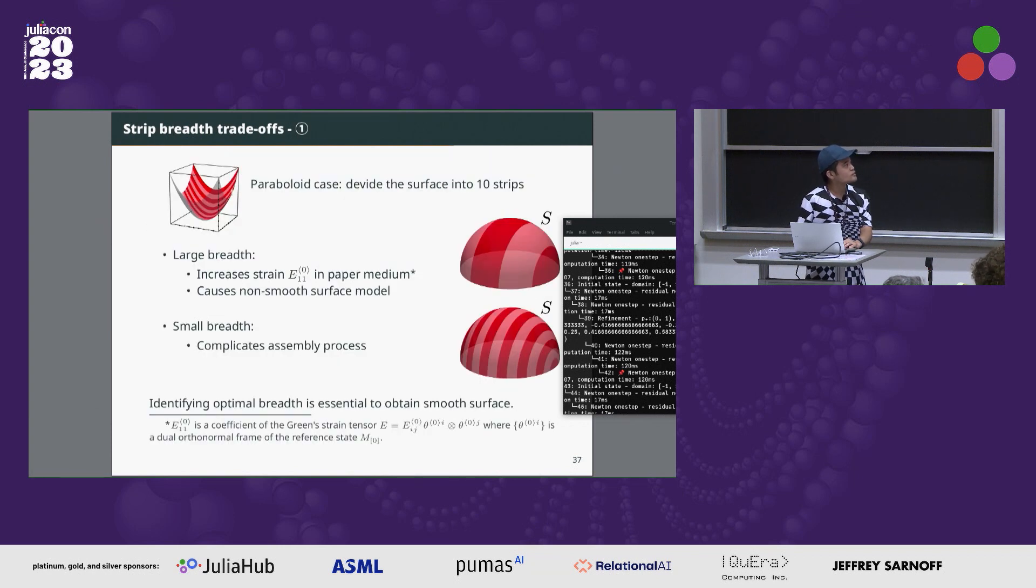We had 10 strips in the paraboloid example, but was it enough or can we decrease the number of strips? If the breadth of the strips is large, the strain in the medium will increase and cause a non-smooth surface model. If the breadth is small, the number of strips will increase and the assembly process will be hard. So identifying optimal breadth is essential to obtain a smooth surface.